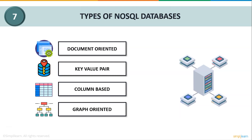Finally, we have graph-oriented or graph-store databases. Data is represented in the form of a directed graph consisting of nodes and edges. Nodes represent an entity, and edges represent the relationship between two nodes. Social networks, logistics, and spatial data use graph storage databases. Neo4j, InfiniteGraph, OrientDB, and FlockDB are examples of graph storage databases.